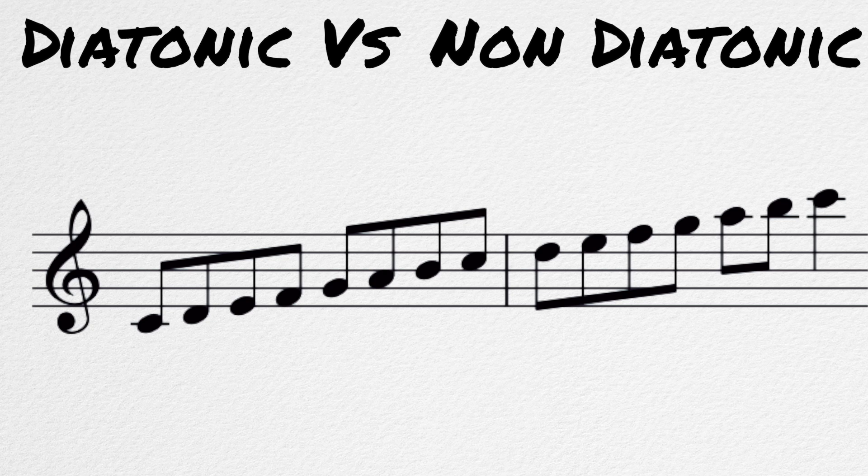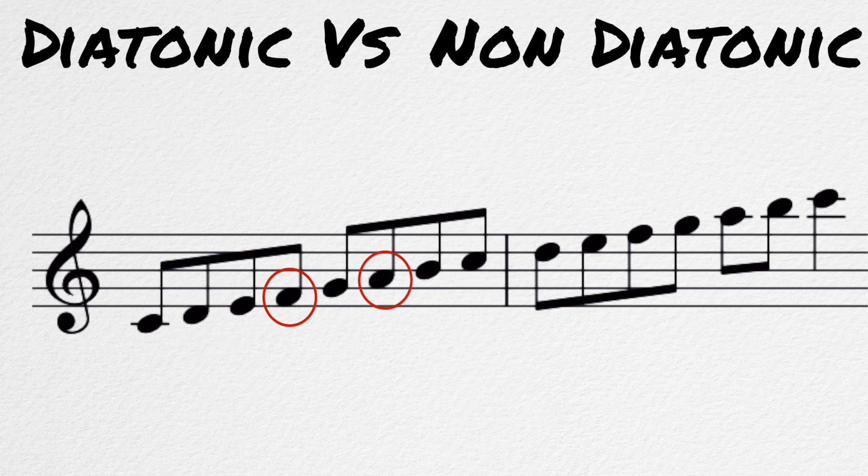Before going into the last type, let's first talk about diatonic and non-diatonic intervals. Diatonic intervals are those that naturally occur within the major scale. All of the intervals we have talked about so far, in one way or another, are within the major scale. Perfect 5ths appear here, major 3rds appear here, minor 7ths appear here.